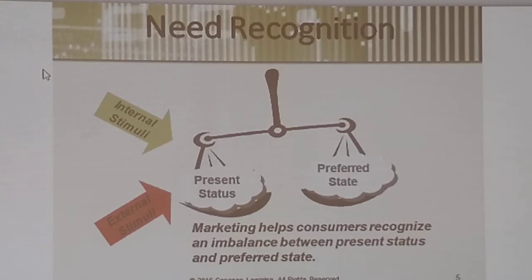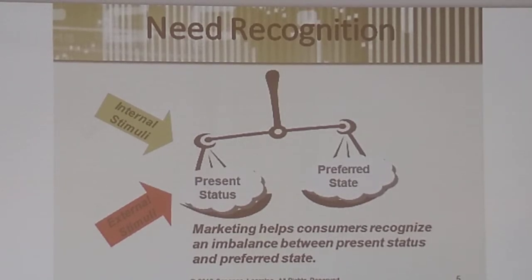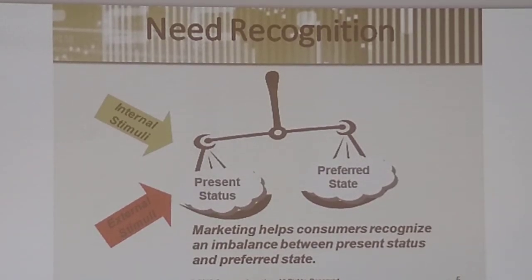These arrows represent internal stimuli, which is the thought process of the consumer's own thought process based on their own experiences, memories, and information that they've obtained themselves. And then there's the external stimuli, and this comes from commercials, ads, advice from friends, and some of the research that they've done.